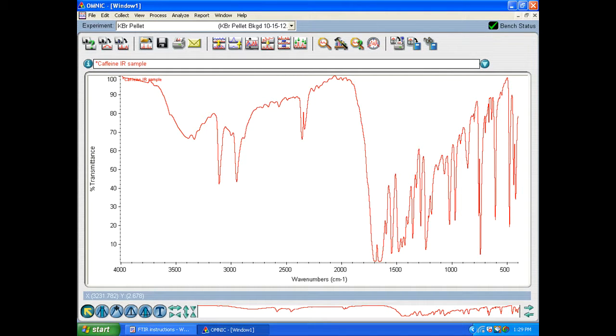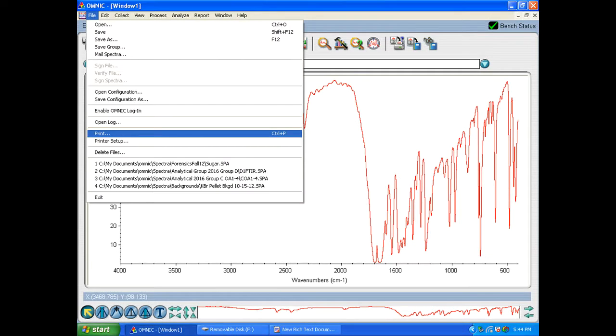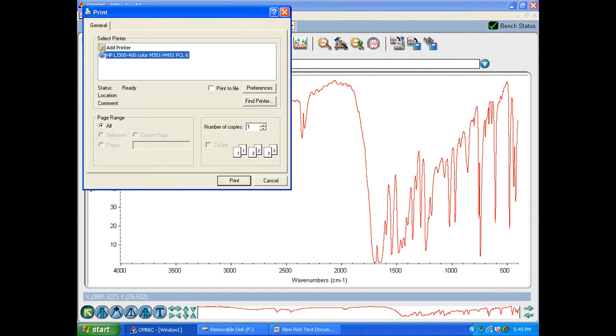So if you want to print out your sample spectra all you have to do is go on up to the top to file and then to print. And print it out to the HP printer that is shown there connected to it. And that's all there is to it.